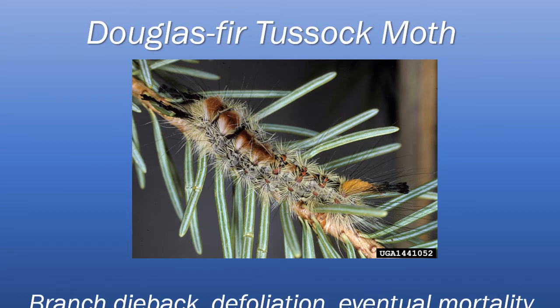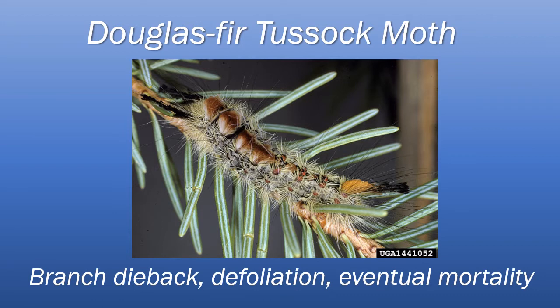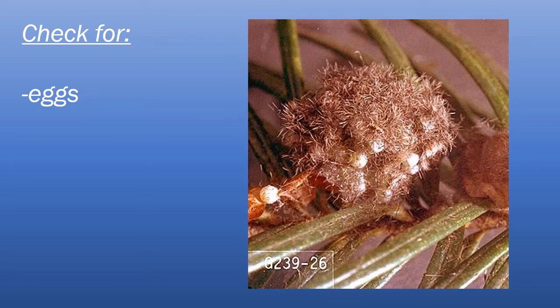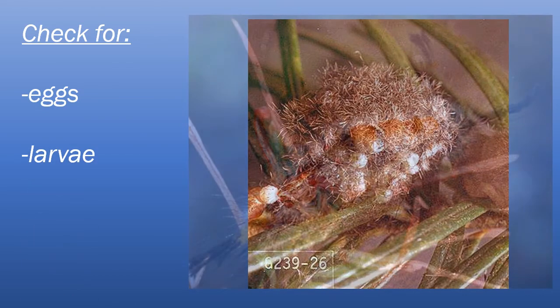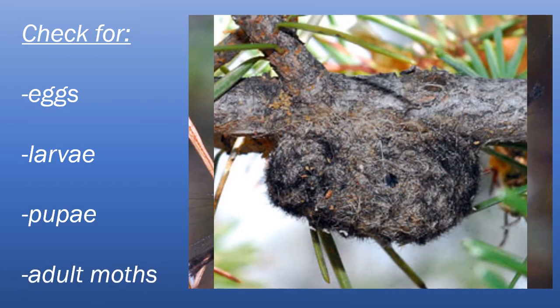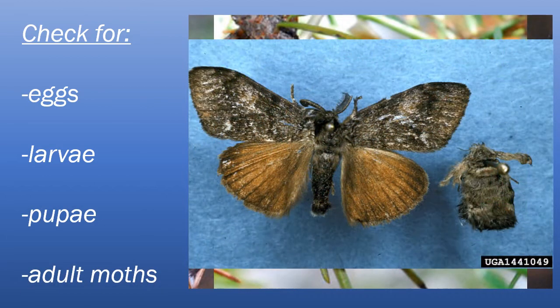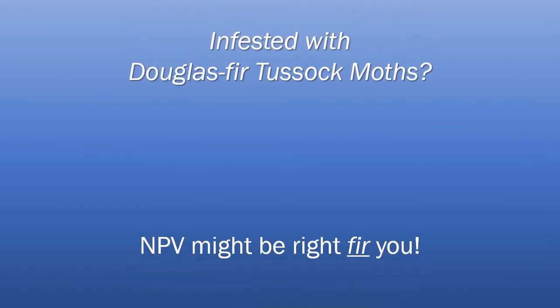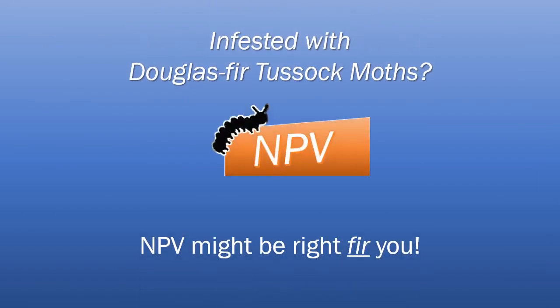Left untreated, an infestation can result in branch dieback and, if lasting over three to four years, an increased risk of death. Inspect your trunk and branches for Douglas fir tussock moths at all life stages: eggs, larvae, pupae, and adult moths. If you detect a Douglas fir tussock moth infestation, talk to your health care professional to see if NPV is right for you. We now return to our regular program.